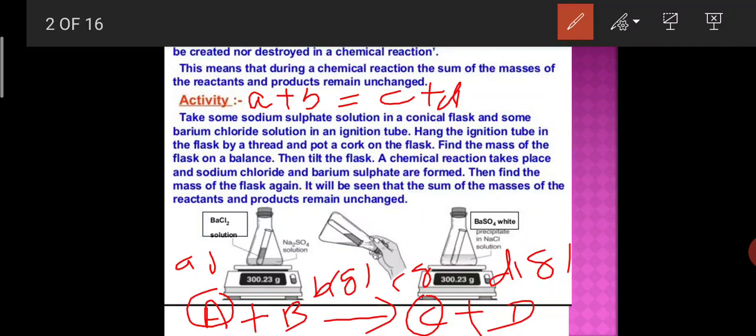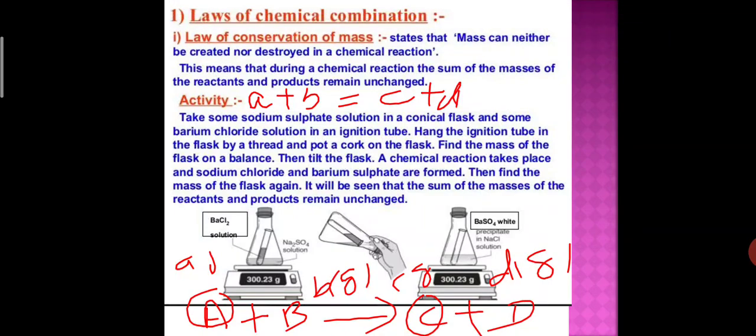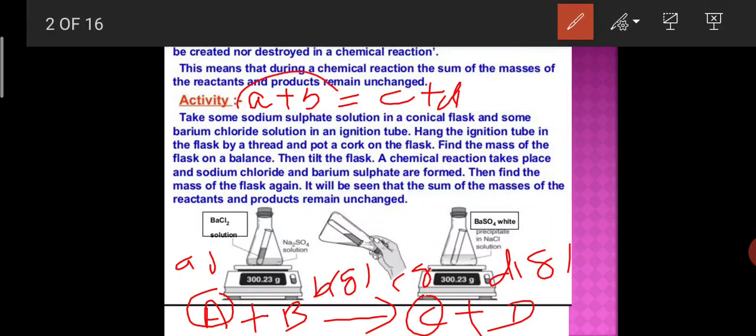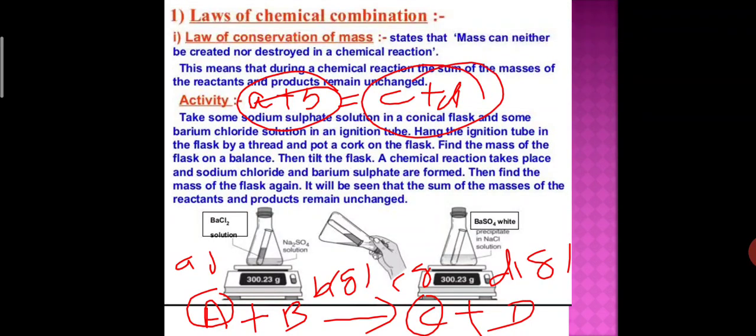This law can be verified by an experiment performed by Lavoisier. When A reacts with B it forms C plus D. If a grams of A and b grams of B react to produce c grams of C and d grams of D, then according to the Law of Conservation of Mass, both sides will be equal: a + b = c + d. Mass can neither be created nor destroyed in a chemical reaction.